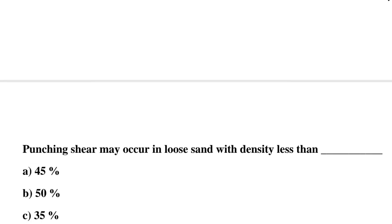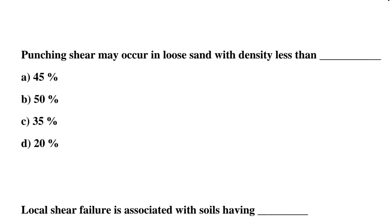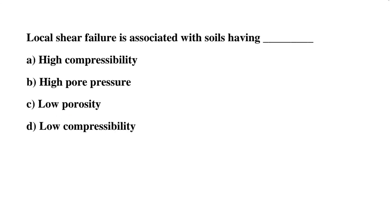Next question: punching shear may occur in loose sand with density less than — Option A: 45%, Option B: 50%, Option C: 35%, Option D: 20%. The correct answer is Option C, 35%.